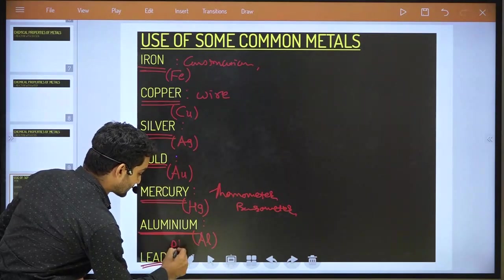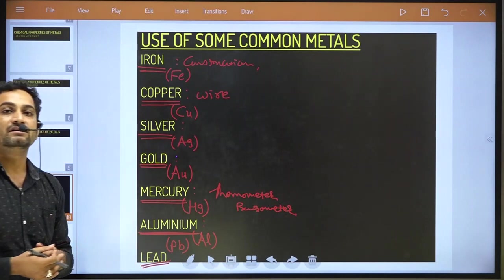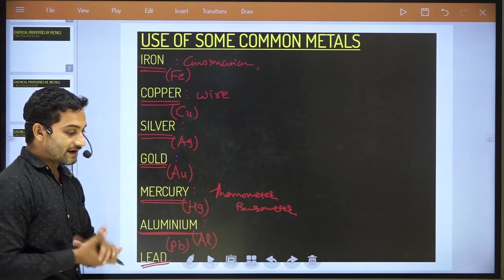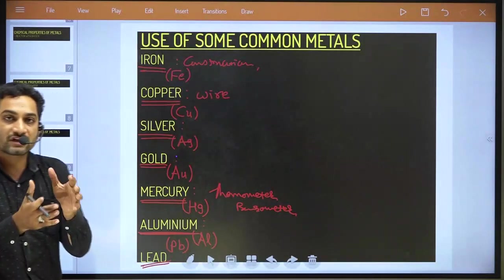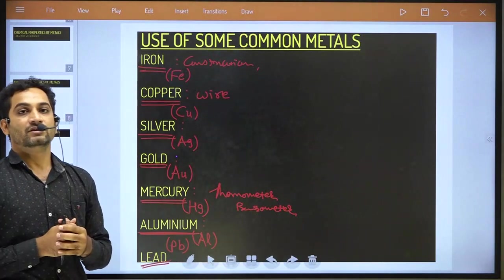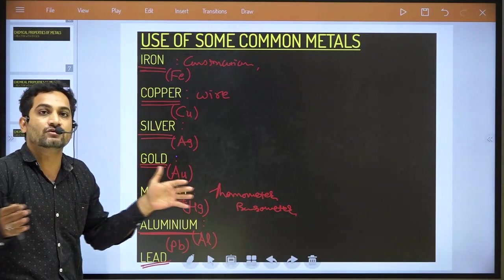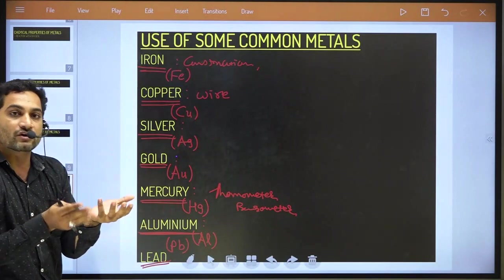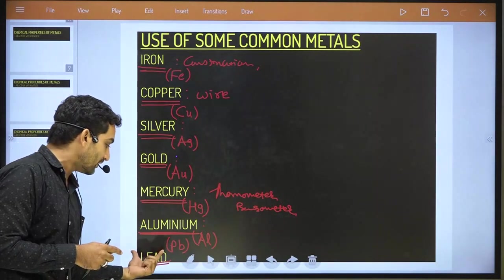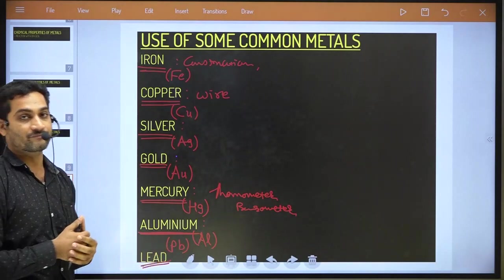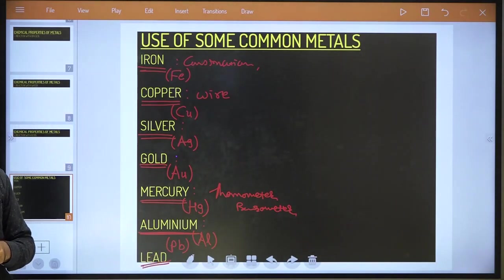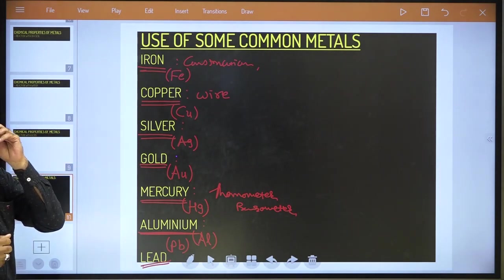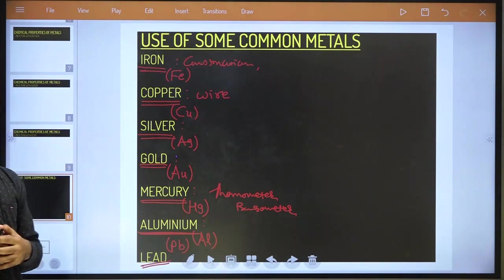Lead (symbol Pb) has a low melting point. Lead is also effective at stopping radiation, so radioactive elements can be stored in vessels made of lead. Lead is used in X-ray machines, lead pipes, alloys such as solder, and protective screens in X-ray equipment.